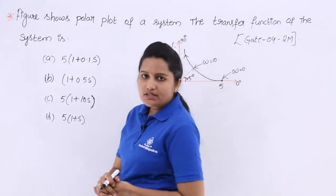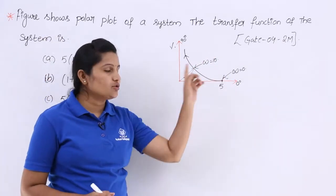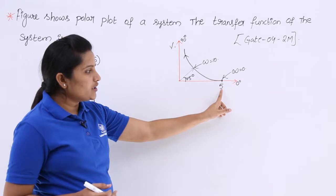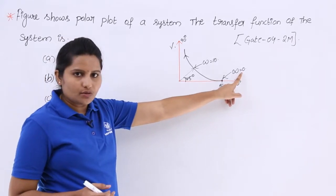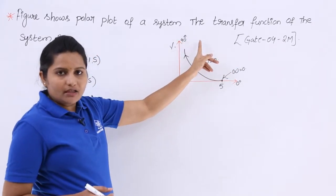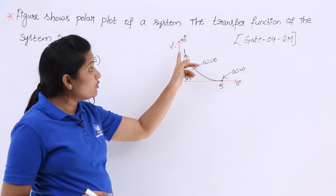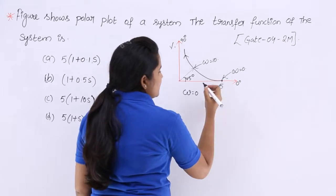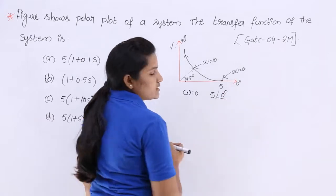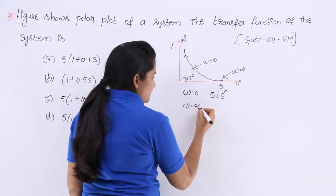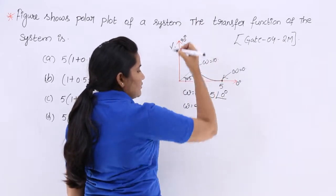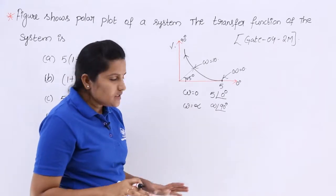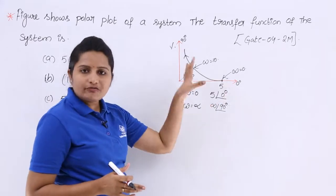This is a very important problem given for two marks in Gate 2004. Observing the polar plot: the plot has magnitude 5 at 0 degrees when omega is equal to 0, and the plot has infinity magnitude when omega tends to infinity, going to touch the 90 degrees line. So when omega equals 0, the magnitude is 5 at angle 0 degrees, and as omega tends to infinity the magnitude goes to infinity touching the 90 degree line.